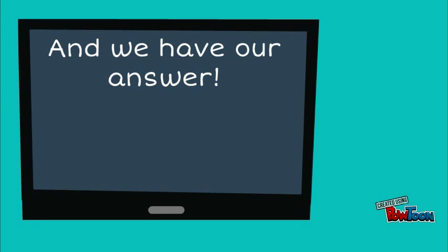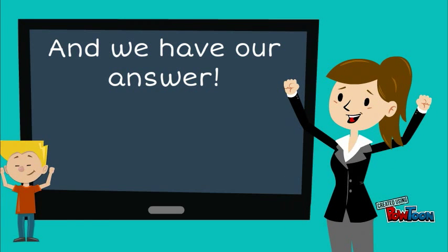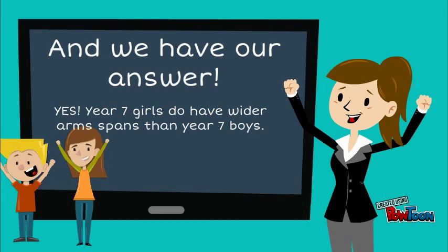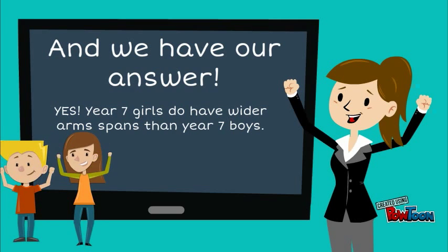From comparing and interpreting the data, we can see clearly that on average Year 7 girls have wider arm spans than Year 7 boys. When we look at the data we can see a massive difference in both genders' mean, median, mode and range. We can also see from the graph that the girls' arm span spike is at a larger width than the boys'.